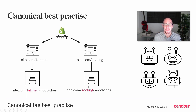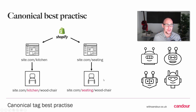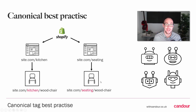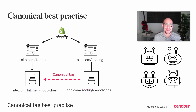Search engines will have to make a choice: if I wanted to rank your website for 'wood chair' or 'wooden chair,' which page do I pick? Because they're identical. This is when Google starts looking at which one has the most internal or external links, because it has to make a decision — it's definitely not going to show both.